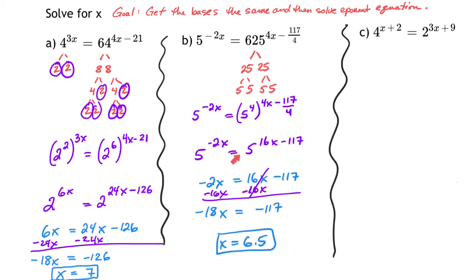Notice what we're trying to do here. When the bases start out different, we break them down, express how many of that factor with an exponent, then do our power to a power where we multiply. Let's try one last one. With 4 and 2, they're both small, but 4 isn't the same as 2, so we break the 4 down to 2 squared.